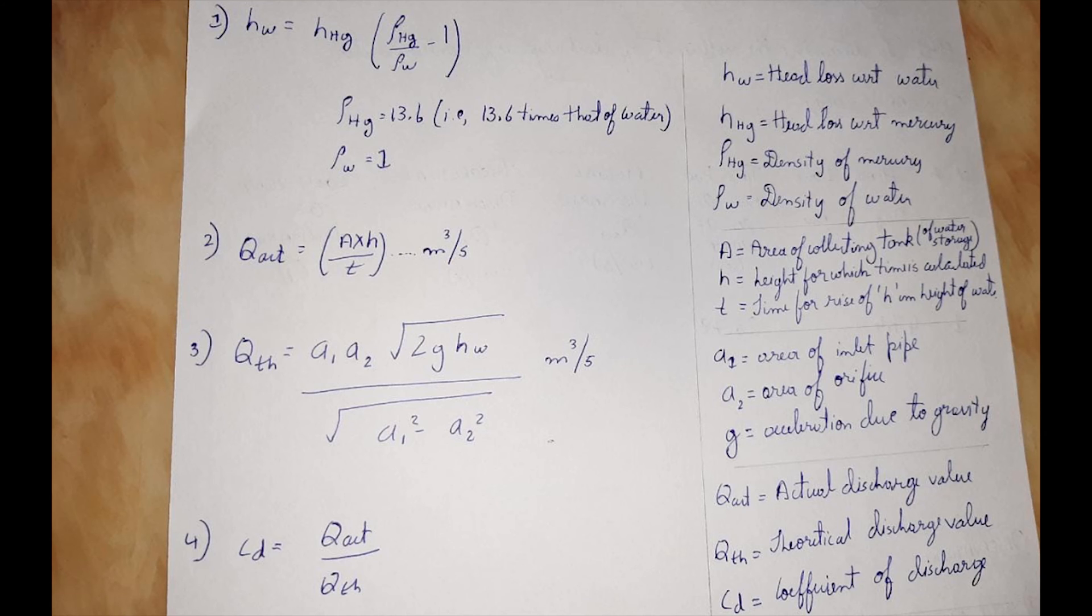Four formulas are required to calculate the coefficient of discharge of orifice meter. The first formula is used to find the head loss of water as the head loss is obtained with respect to mercury.